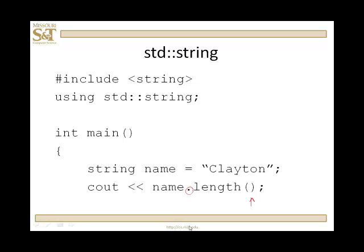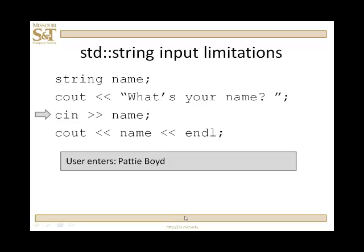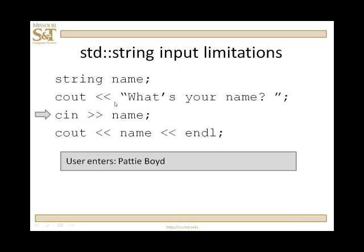Quite obviously, this is going to return the length of the data in that object, and it does. Suppose we have 'string name', prompt for your name, read in name, cout name. Suppose the user enters 'Patty Boyd' — upon output, it outputs only 'Patty'. The extraction operator used for a string type object will only read up to the first white space. So when reading in 'Patty Boyd', it reads up to the space and that's it. 'Boyd' remains in the input buffer — you have to always be aware of what's in your input buffer.